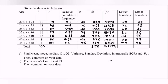Kindly refer to the question: find the mean, mode, median, Q1, Q3, variance, standard deviation, interquartile range, and P75. Next, we have the Pearson coefficient of skewness. Then, comment on your data.